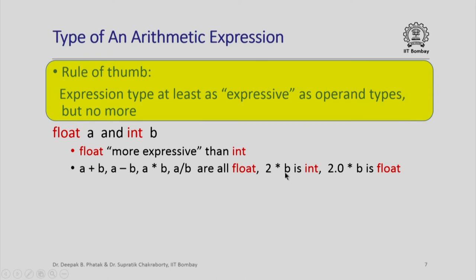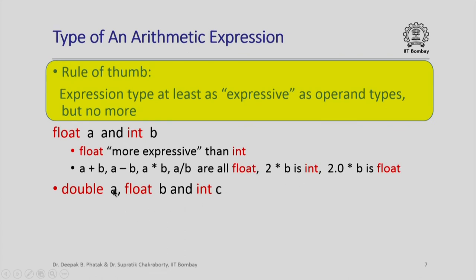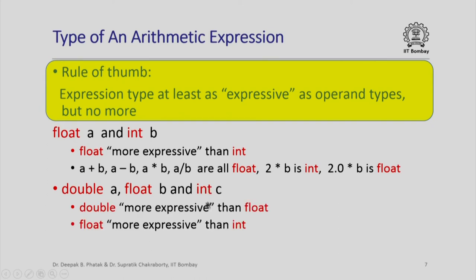If I look at the expression 2 star B where B is an integer and 2 is an integer constant, the type of this expression is int. However, if I have 2.0 star B, where B is int and 2.0 is a floating-point constant, then the type of this expression must be float. Here is another example: if A is double, B is float, and C is int, then double is more expressive than float, and float is more expressive than int, so an expression involving all of A, B, and C will have type double.